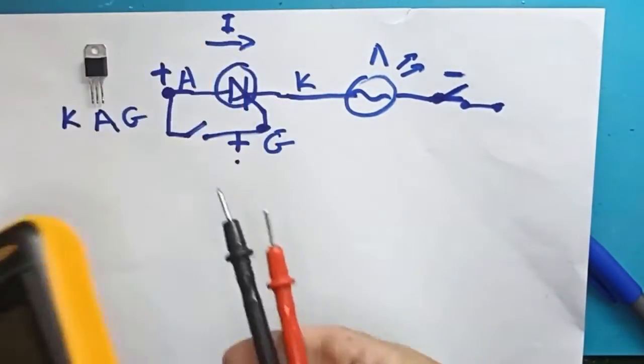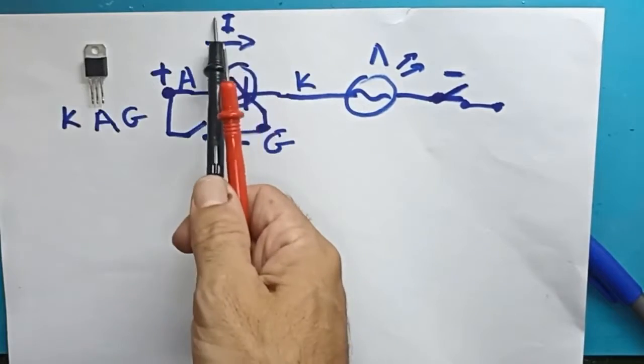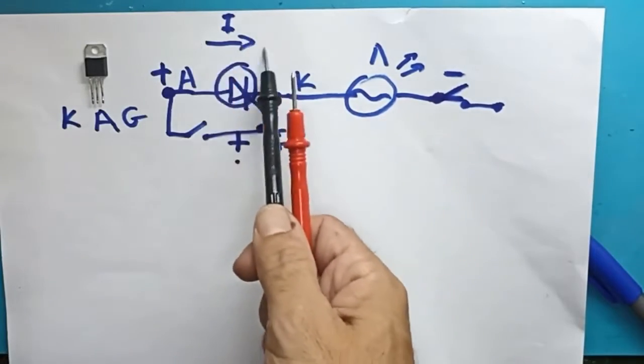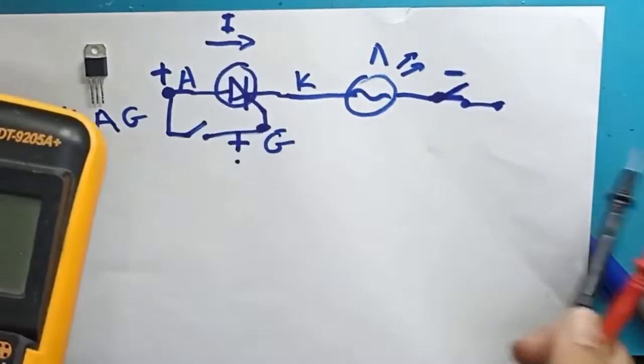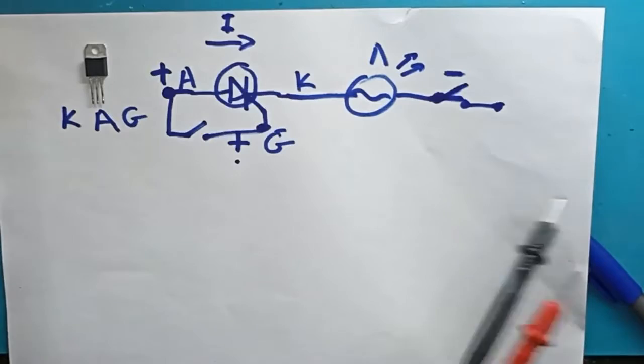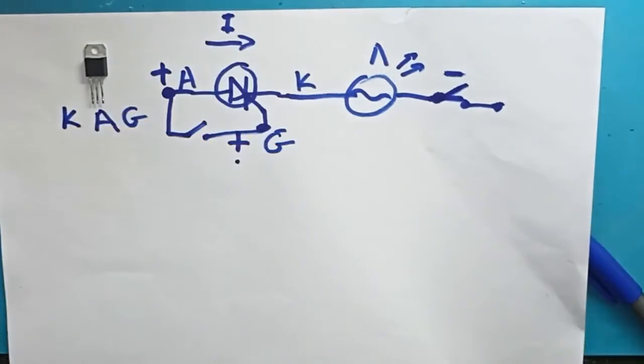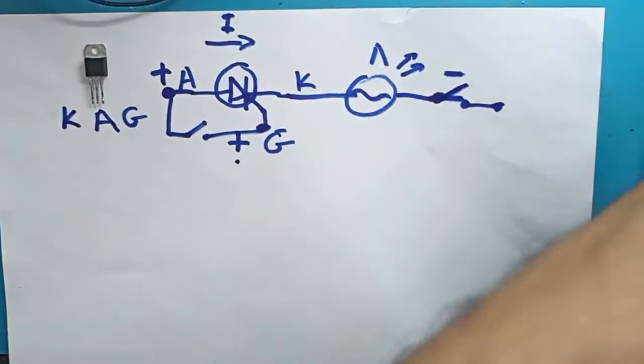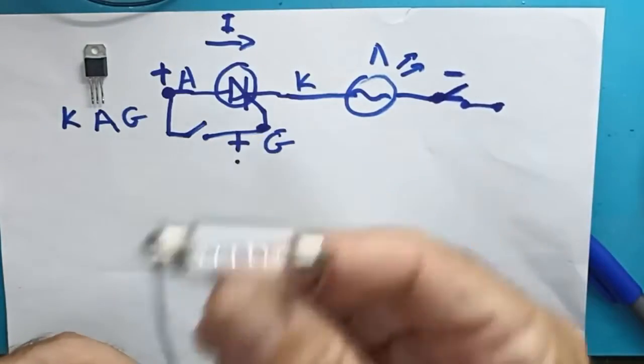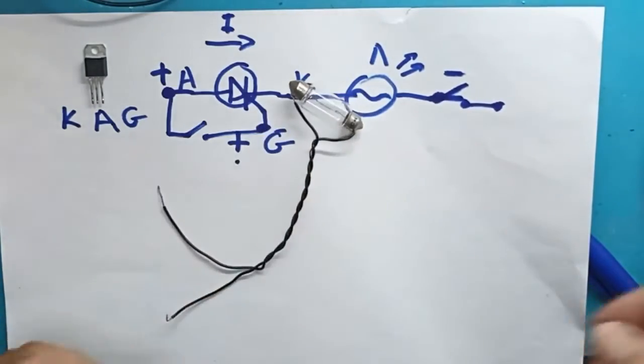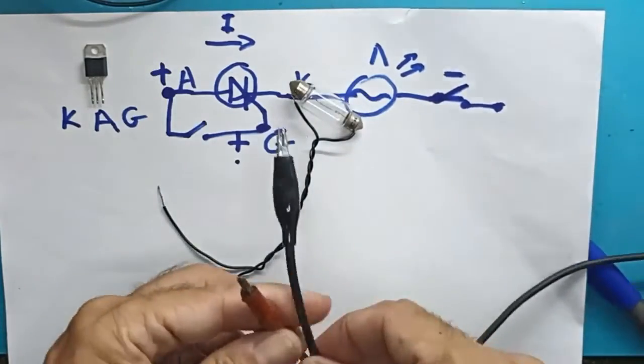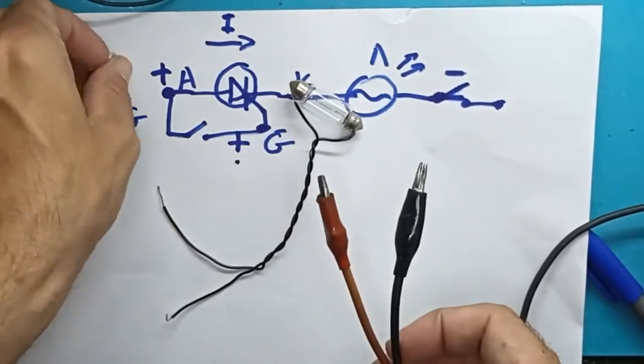We cannot do it with a multimeter. Some old multimeters which were with a needle, maybe we could manage to measure it, but still not for sure, because they cannot provide much current for the thyristor to remain conductive. So let's see it in practice. I have here a 12-volt incandescent lamp to draw some current, and I have my power supply here, plus for the thyristor. So I will build the circuit that I have designed on paper.